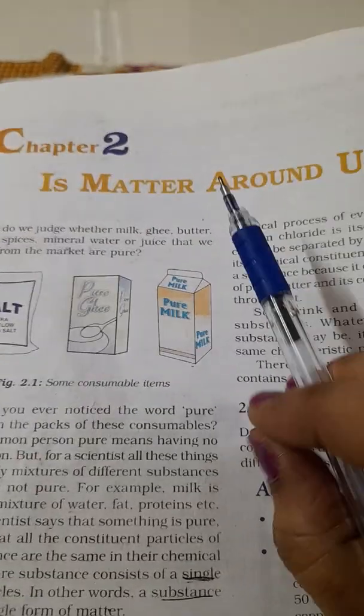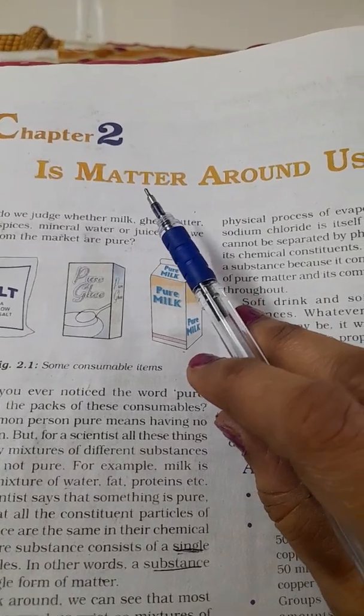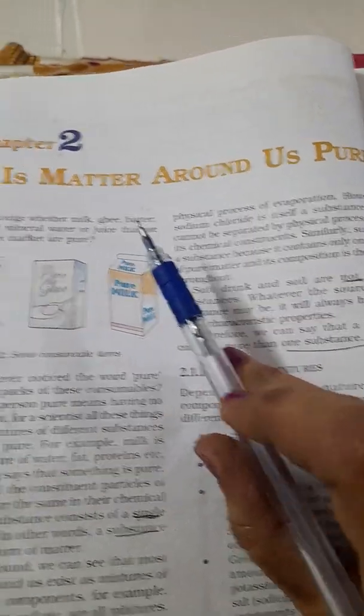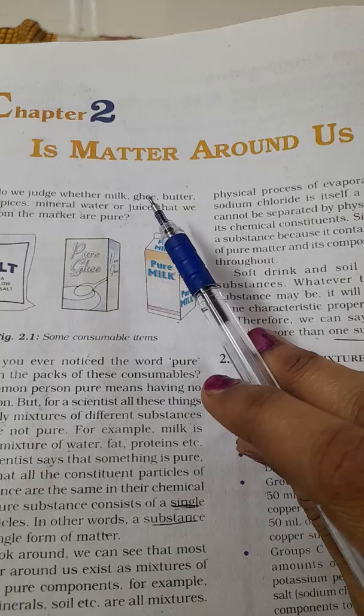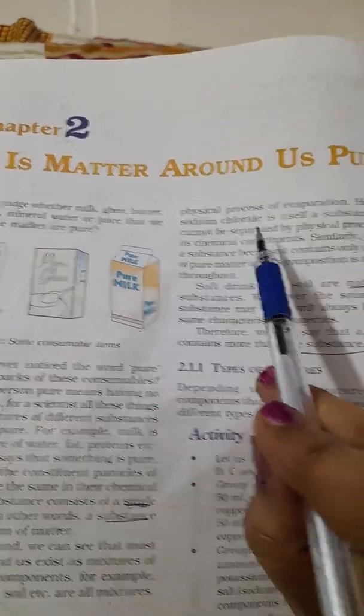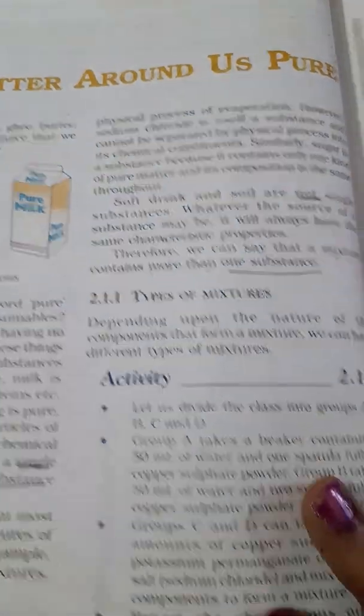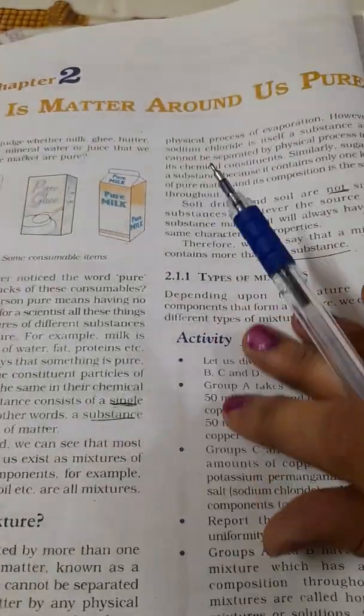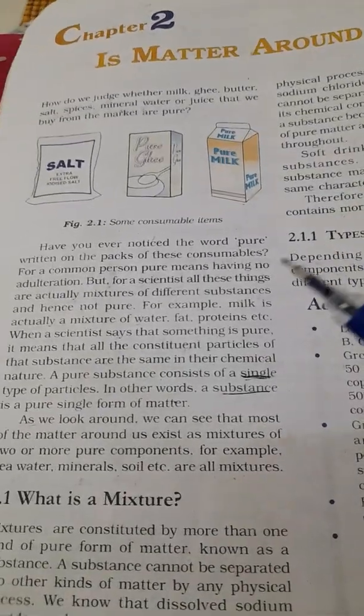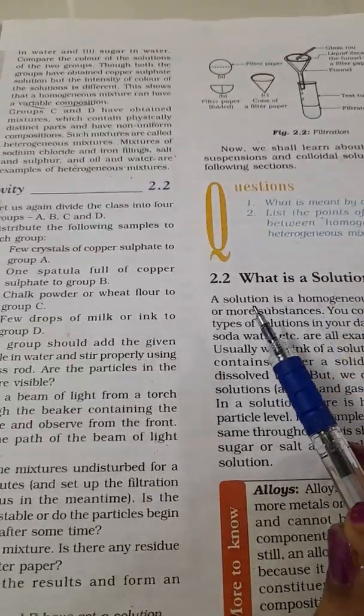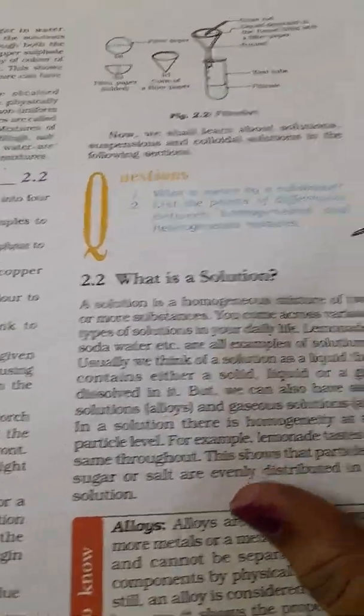So today we are going to continue with chapter 2 class 9 NCERT. We already uploaded one session of chapter 2, is matter around us pure. Today we are going to continue with the remaining part of the lesson. Hope you all read and the concepts are clear for you. We finished up to this section, so we have to start from what is the solution today.